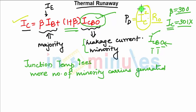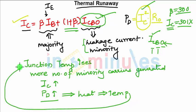If your IC is increasing, the power dissipation in the transistor will increase. So minority carriers increase IC, IC increases power dissipation in the transistor which increases heat. If heat is increasing, temperature will increase again. If temperature is increasing, the whole process repeats again.